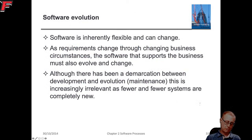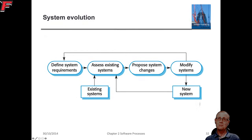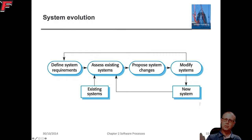Software evolution: we need to change software because the things that the software talks to change. We need to define what changes about the system, assess the existing system to make sure it meets or doesn't meet requirements, propose changes, modify the system, and produce the new system.